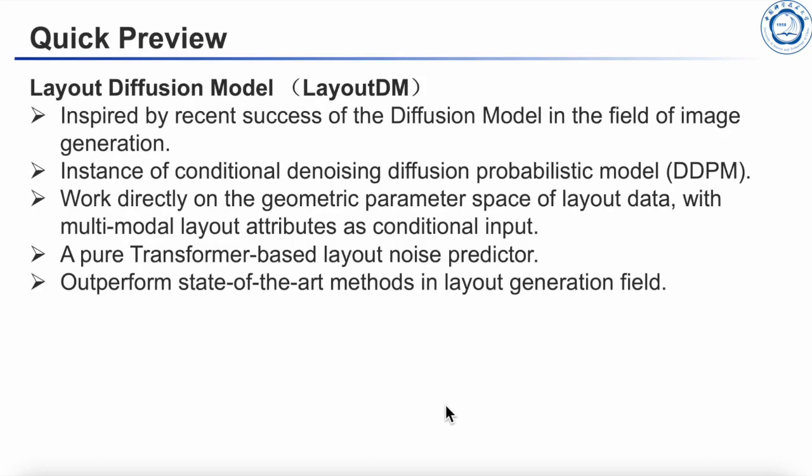Quick preview, this paper introduces a novel layout generation model named Layout DM, based on a conditional denoising diffusion probabilistic model DDPM, and a pure transformer-based layout noise predictor. Drawing inspiration from the recent success of the diffusion model in image generation, we investigated the potential of conditional DDPM in the field of layout generation. Our approach outperforms state-of-the-art methods both qualitatively and quantitatively, demonstrating the effectiveness of our model.